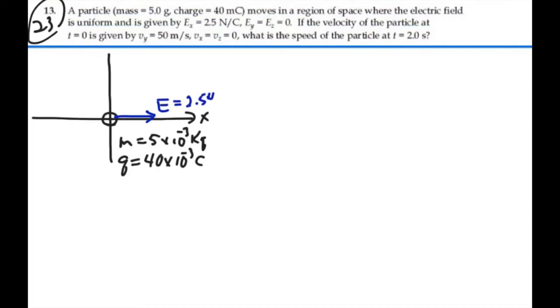All right, let's try to simplify this problem into what's actually going on. We've got a particle. Mass is 5 grams, 5 times 10 to the minus 3 kilograms. Charge is 40 millicoulombs, 40 times 10 to the minus 3 coulombs. We have an electric field in the positive x direction, magnitude 2.5 N per coulomb. And we have an initial velocity in the y direction of 50 meters per second.